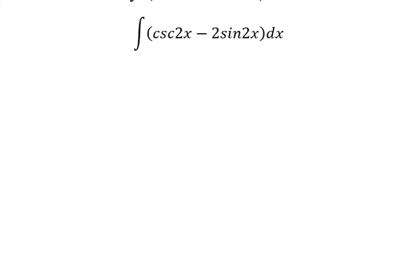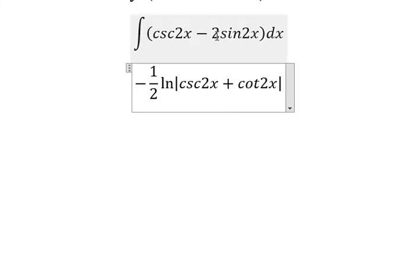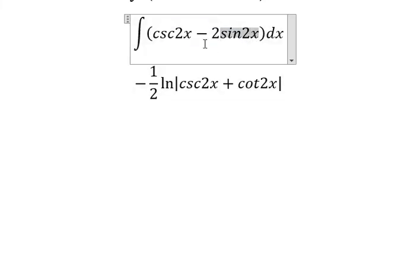We have negative 1 over 2 ln of the absolute value of cosecant 2x plus cotangent 2x. This is the coefficient for the integration of sine 2x with the negative.